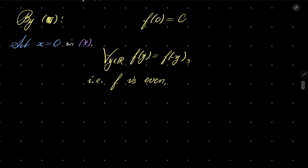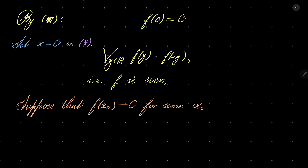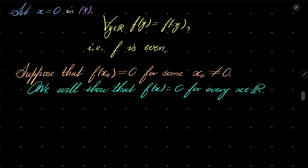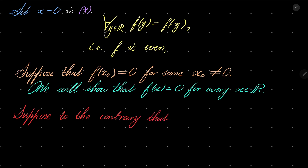Now the most interesting part. Suppose that f of x₀ is 0 for some non-zero x₀. We will show that in that case, f of x must equal 0 for every real number. Suppose to the contrary that f of y₀ is not 0 for some non-zero y₀ — I can assume it's non-zero because f of 0 is 0. We have two subcases.